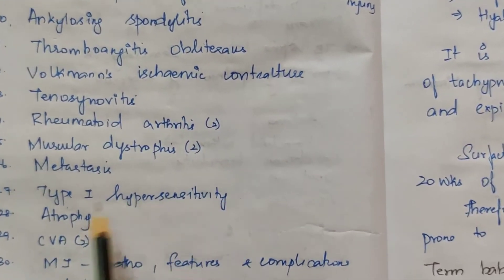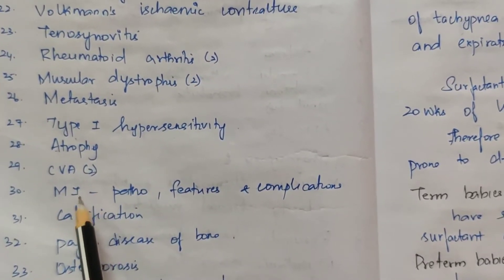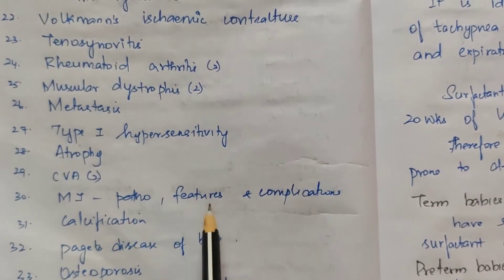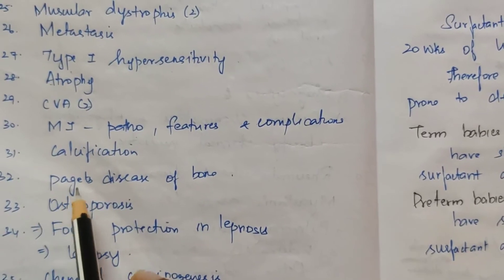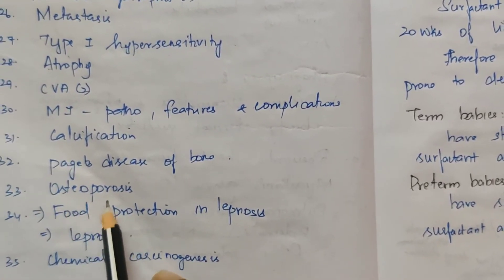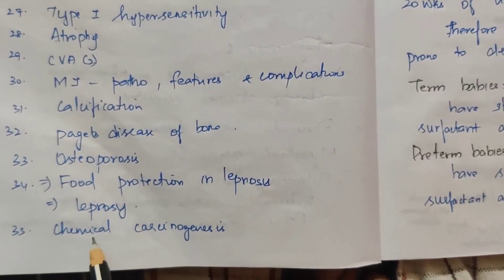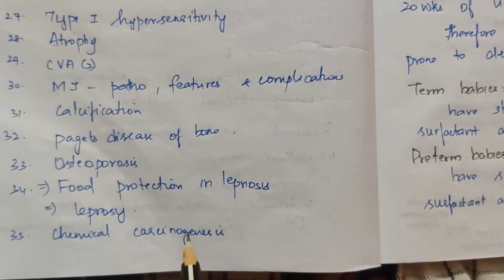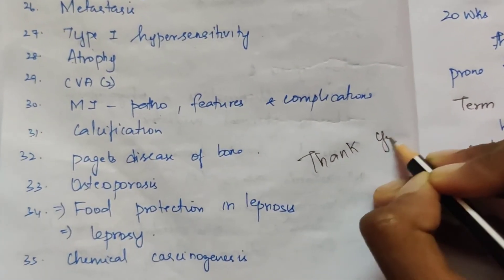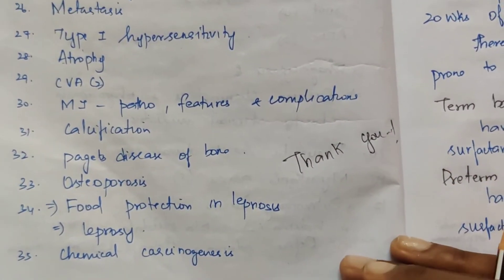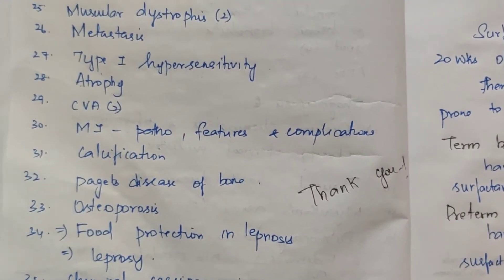Additional 5-mark pathology topics: type 1 hypersensitivity, atrophy, CVA — cerebral vascular accident, myocardial infarction — pathogenesis, features, and complications, calcification, diseases of bone, osteoporosis, foot protection in leprosy, leprosy, and chemical carcinogenesis — appeared 3 times.